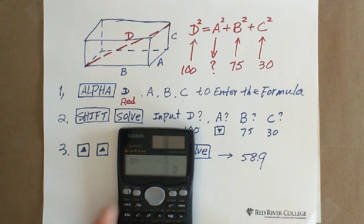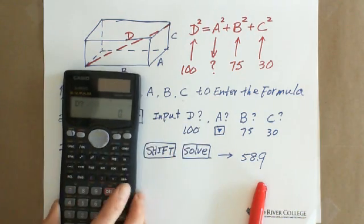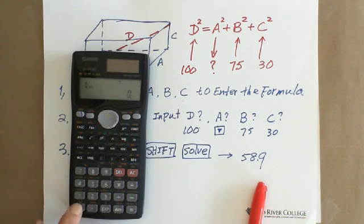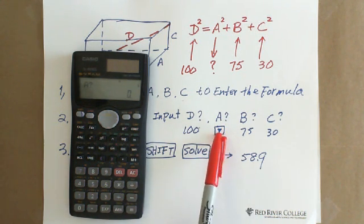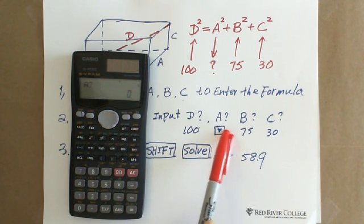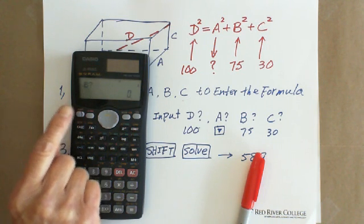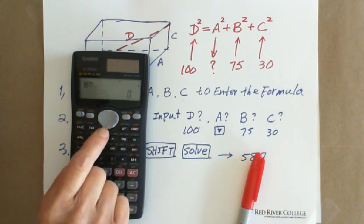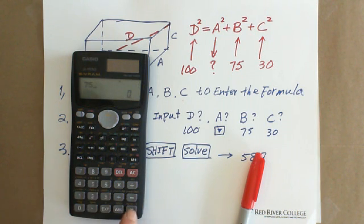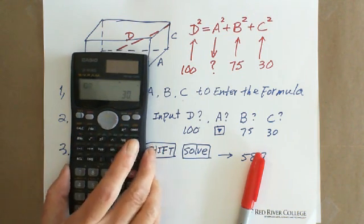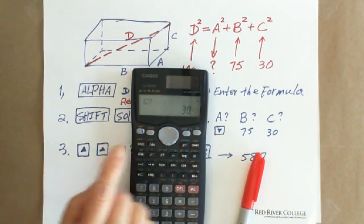Shift solve. You have D, question mark D. When you have question mark D, you enter 100. A, because we're looking for A, so we need to use this button to go to B. Use this button down. Go to B, because we're looking for A. We're not entering A. Down to B. B is 75, equal. C is 30, right? Enter. C equals 30. Then we need to use this button, up button.